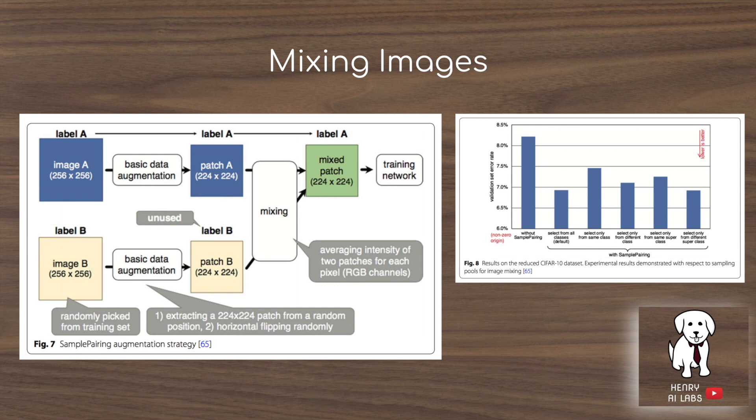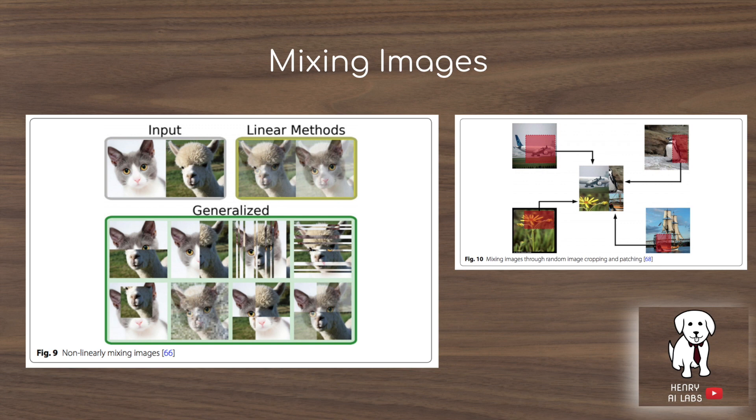Mixing images is another surprisingly successful data augmentation. What they do is extract patches and randomly average them together pixel-by-pixel to train a network. This may be successful because of the increased dataset size or some regularization effect — it's unclear exactly why it works, but it does. They also experiment with non-linear mixing and other interesting ways of mixing images to form new samples.